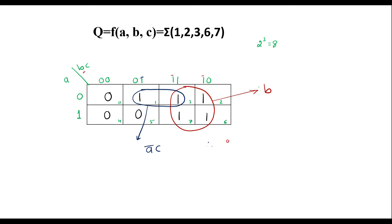So, therefore, now I can write the simplified Boolean expression that is f of a, b, c is equal to b plus a bar c.